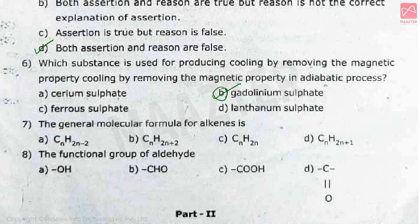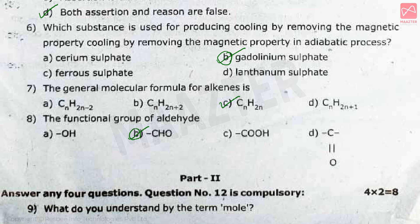The next question: the general molecular formula for alkene is CnH2n. The next question: what is the functional group of aldehyde? The correct answer is option B, CHO. Next, we move to the 2-mark section.